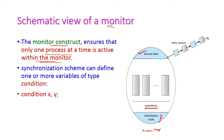The monitor construct ensures only one process at a time is active inside the monitor. We are having n number of operations, but only one operation is allowed to execute at a time. There are condition variables x and y, and based on the condition the corresponding operations will be executed.